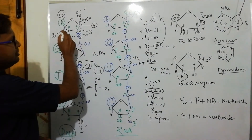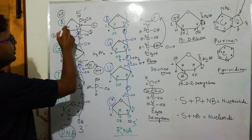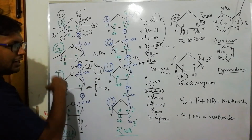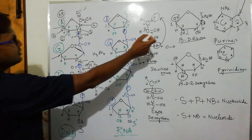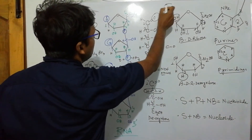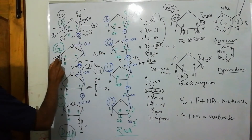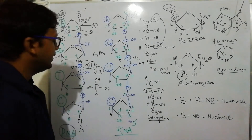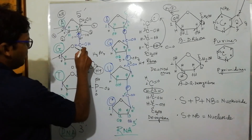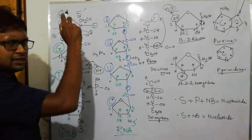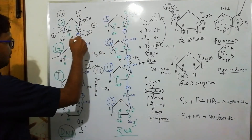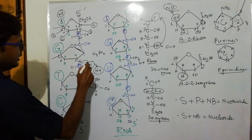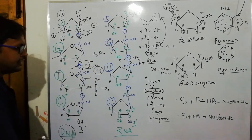Carbon one forms a glycosidic bond with the nitrogenous base. Carbon two remains free in ribose (or has only H in deoxyribose). Carbon three is involved in phosphodiester linkage. Carbon four remains in the ring, and carbon five forms a phosphodiester linkage with the upper sugar molecule. This gives two ester linkages — hence phospho-di-ester — and this is how DNA and RNA chains are formed.